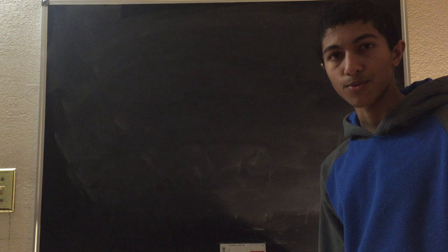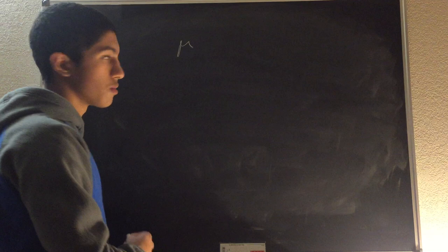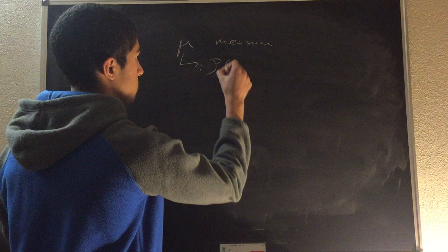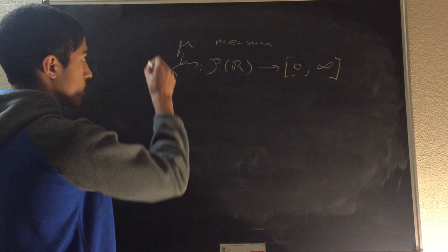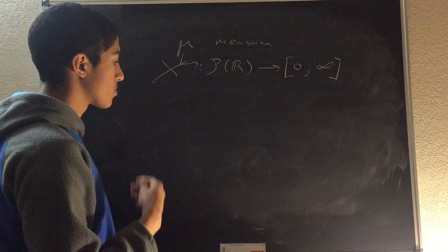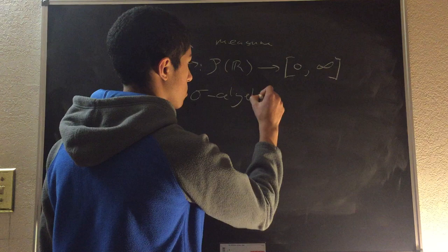Hello everybody, Math Hobo here, and today we will discuss how to fix the problems that we encountered in the last video. Specifically, we will try to fix how to define — specifically where to define our function mu, which is our measure. Before, we defined it on the power set of reals to zero to infinity, and this did not work. So now what we will try to do is assign mu to the largest possible space that we can, while still maintaining coherence and soundness. So what we will do is define it on something called a sigma-algebra.